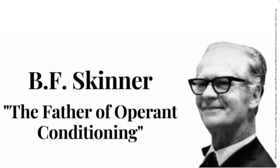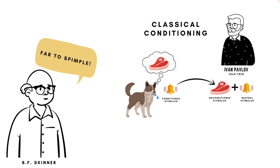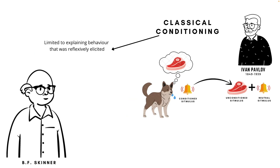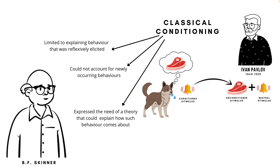Skinner proposed that human behavior occurs as an outcome of conditioning. However, he had different views than Pavlov's classical conditioning theory. Skinner stated that classical conditioning was limited in explaining existing behaviors elicited reflexively, and did not account for new behaviors such as how a person learns to drive a car. He proposed a theory that could explain how new behaviors were acquired via conditioning.